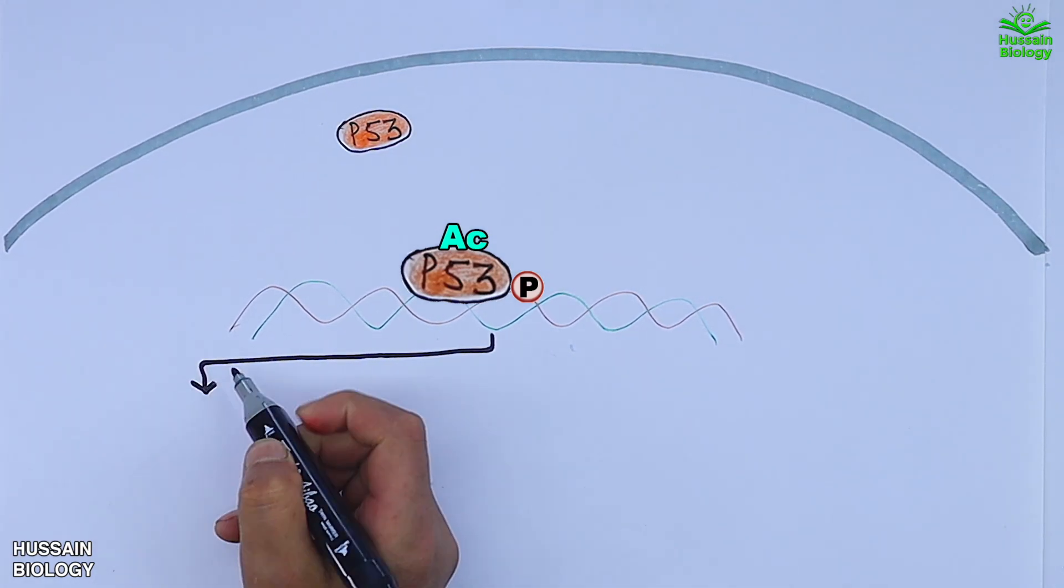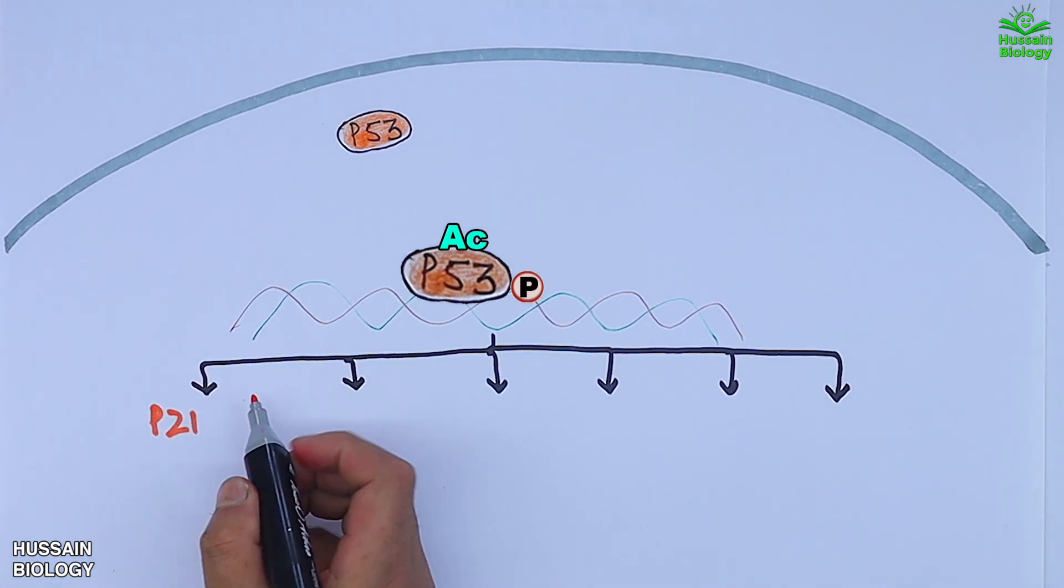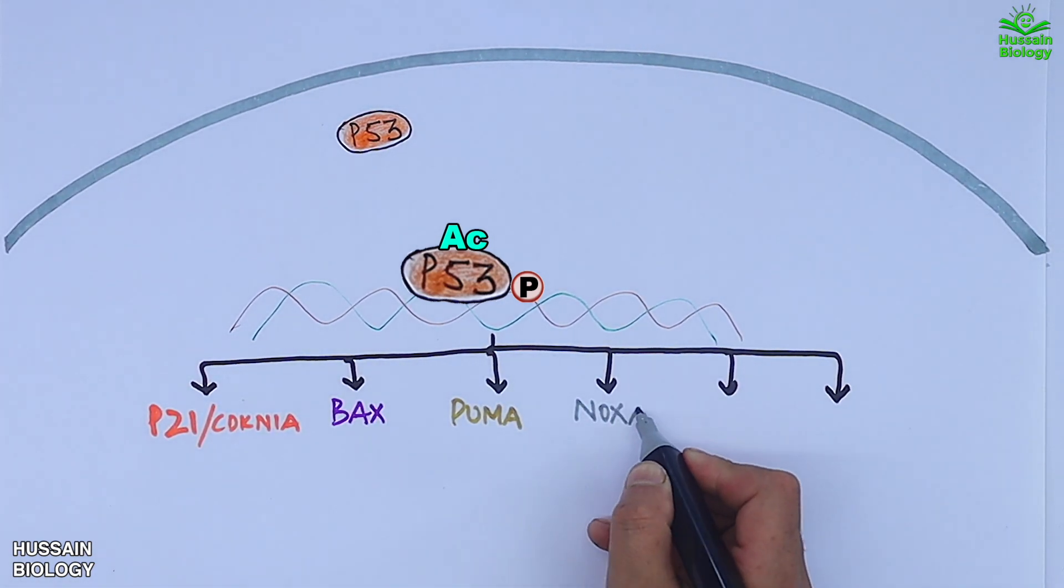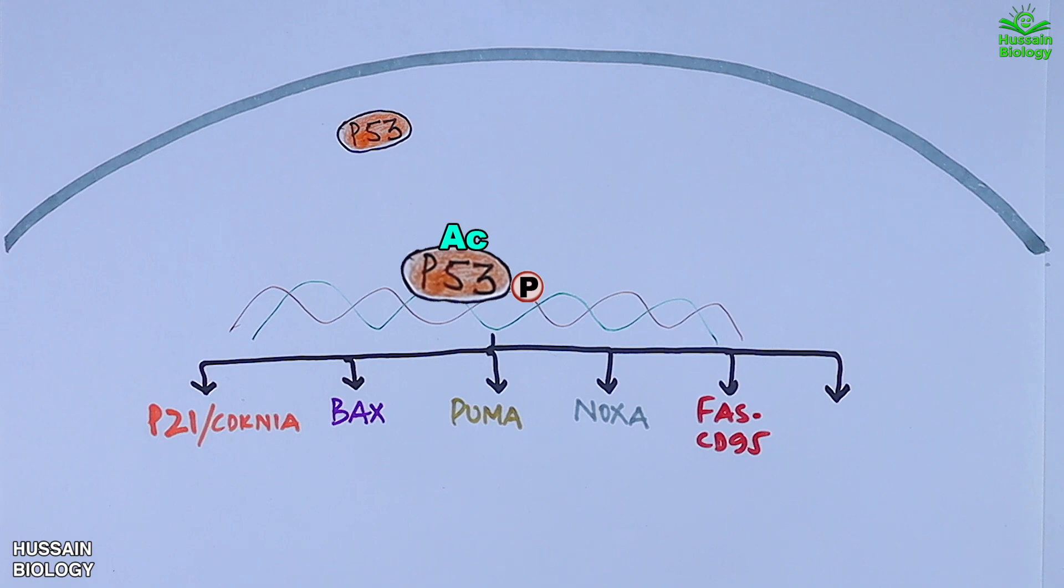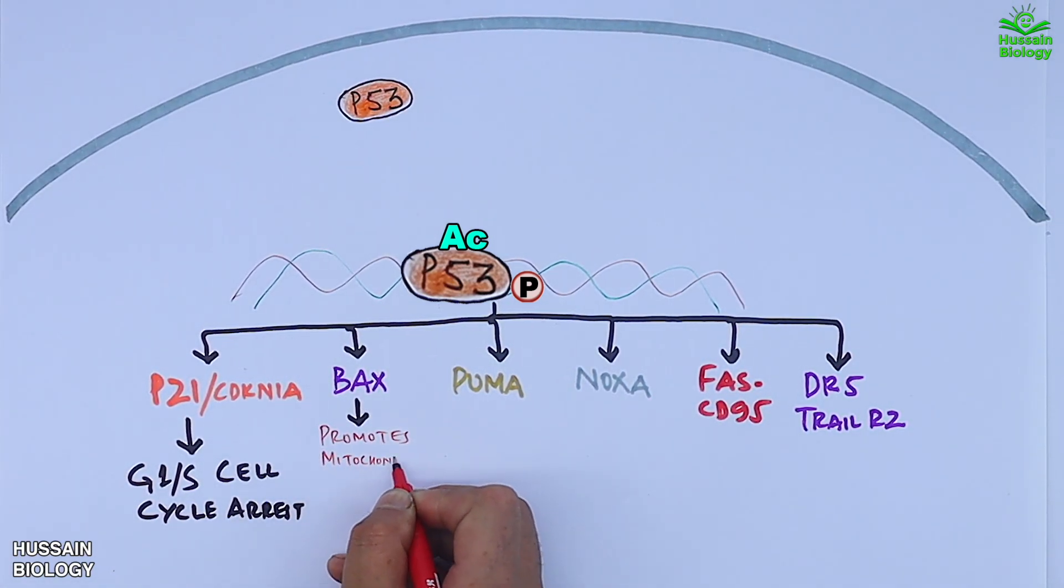And from here we get the transcription of various genes like we get the transcription of P21, BAX, PUMA, NOXA, FAS, CD95, DR5, TRAIL R2. The first one, P21, mediates the G1/S cell cycle arrest. BAX promotes the mitochondrial apoptosis. PUMA and NOXA enhance apoptosis.